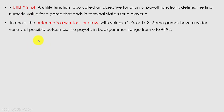Taking the example of chess: the outcome is a win, loss, or draw, with values plus 1 for win, 0 for loss, and 1/2 for draw. Suppose I want to train a machine to play chess — the computer is one player and you are another. The utility value for a win is 1, for a loss 0, and for a draw 1/2. Some games have a wider variety of outcomes; for example, backgammon ranges from 0 to 192.